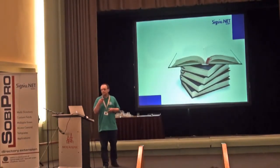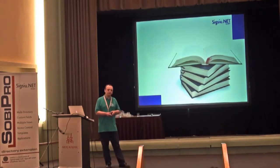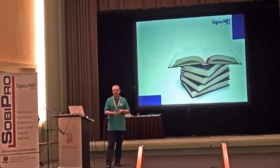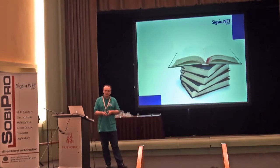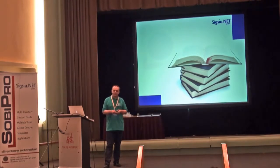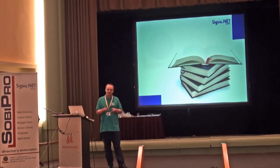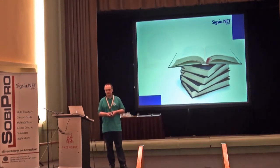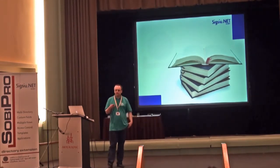When Joomla 1.5 was released, we found the template code for includes — things like jdoc:include head and so on. It is a really nice and very handy feature, and it has a really big advantage: it's not PHP code. I think that's really important because many Joomla users are not PHP developers. If they do something wrong in this code, nothing really bad can happen — maybe something will not be displayed, but the site still works fine with no fatal error.